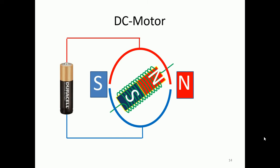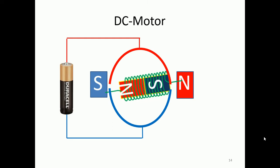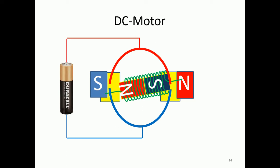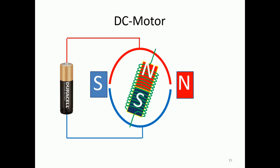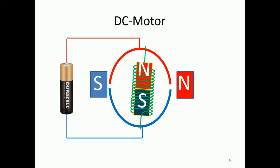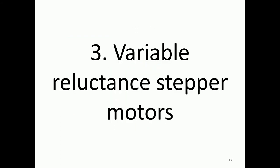So what happens is once you reach this point then you will have a swap over. So as soon as you go over these two gaps, the polarity will swap over to the other side. And that will cause again a 180 degree turn which again causes a swap over and you have now a continuous rotation. And this is your DC motor.